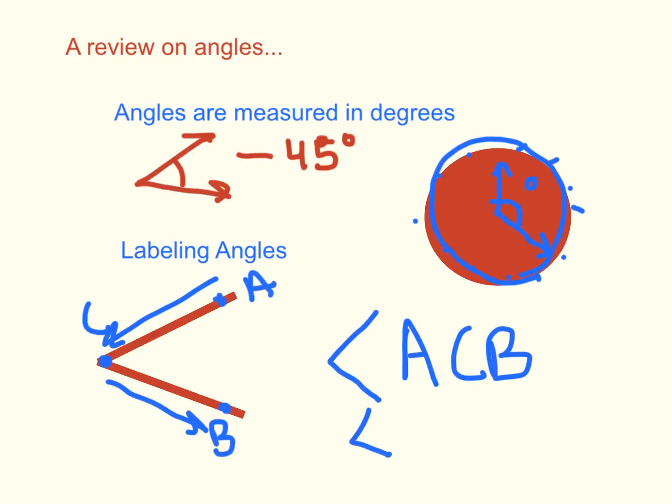Now, we could also write it as B. Then we go to our vertex, C. Then we go to our other ray, A. If you notice, the vertex is always in the middle. So, when you're thinking about it, think ray, vertex, ray. A good old vertex sandwich.